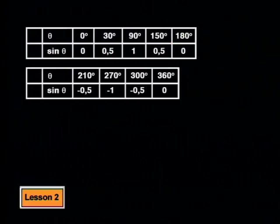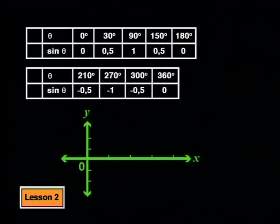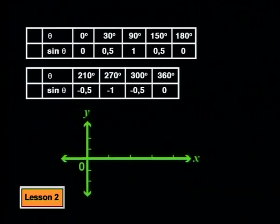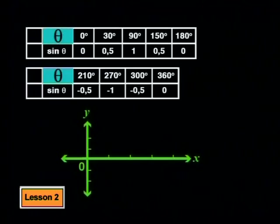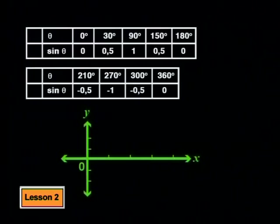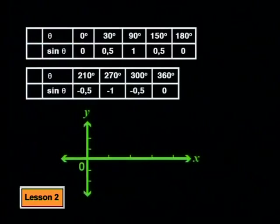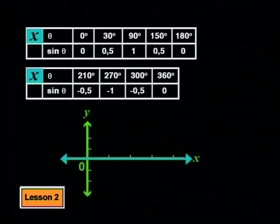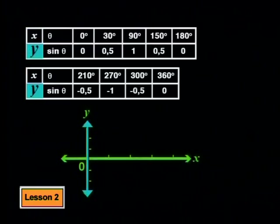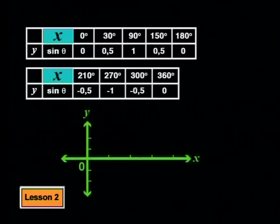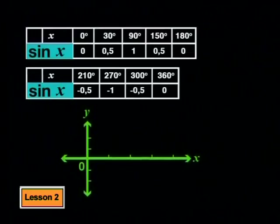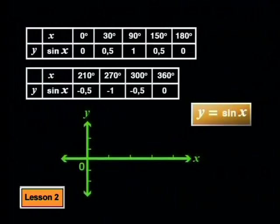To draw the graph of this function, we are going to need a set of axes and we will need to choose which axes to use for which variable. We need to decide which axis will represent theta and which will represent sine theta. We know that the ratio depends on the size of the angle, so we will represent theta on the horizontal axis and sine theta on the vertical axis. Our theta values become the x values for the function and the sine theta values become the y values. So x represents the size of the angle and y represents the sine ratio. The formula for our function is y equals sine x.